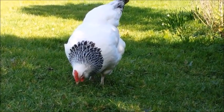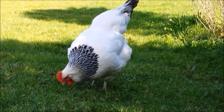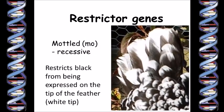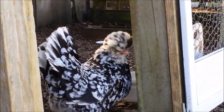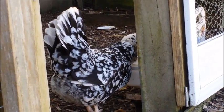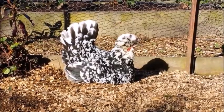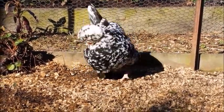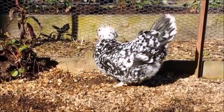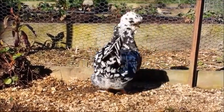Some restrictor genes work not on the chicken as a whole but on each feather. The mottled gene restricts the eumelanin from being expressed on the tip of each feather, so each feather has a white tip. If the bird would otherwise have been black, each feather is black with a white tip, so the overall effect is mottled — like my mottled Houdan fling. The mottled gene is an autosomal recessive gene, so every chicken that looks mottled has two copies of the gene and mottling breeds true.